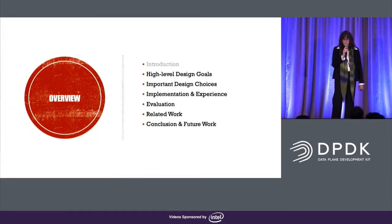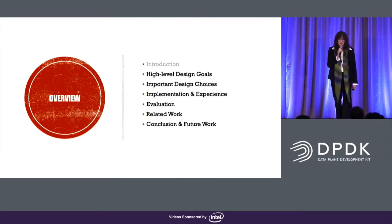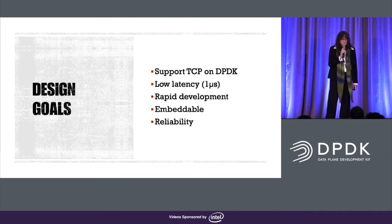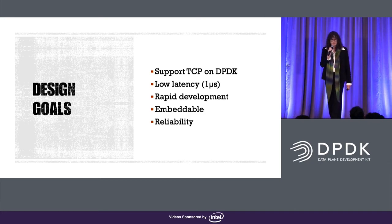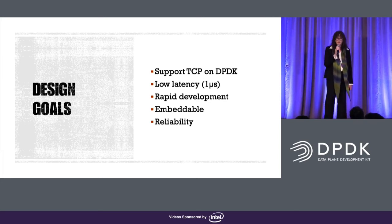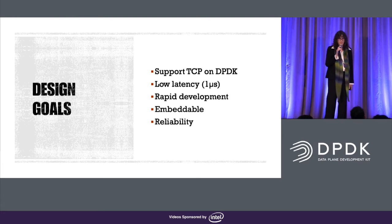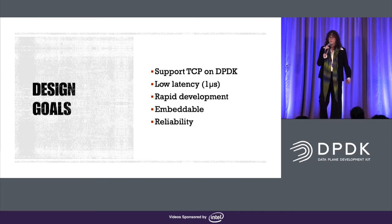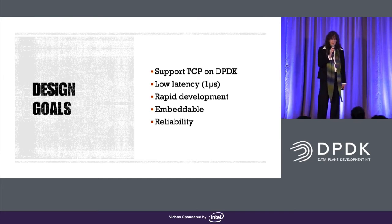Here's an overview of the topics I'm going to cover. Next, we're going to cover high-level design goals. We want to support TCP/IP on DPDK, as I mentioned. Our goal is to be low latency. We wanted rapid development, because it wouldn't do for us to spend three years to complete our research. We wanted something that was embeddable and really reliable — we wanted to produce a prototype that could be turned into something production-ready, as opposed to being thrown out.